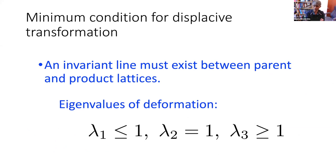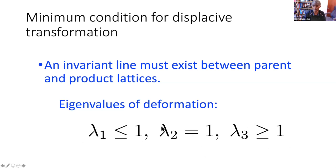The fundamental condition for a displacive transformation is that in order to have an interface which can cause the atoms to move in a disciplined manner, you must have at least one line in that interface which is completely coherent between the parent and product lattices — otherwise diffusion is required. This means that if you imagine the parent crystal being deformed into the product, the eigenvalues of that deformation must satisfy: one eigenvalue equals one — leaving that eigenvector completely undistorted and unrotated — one must be less than one, and one must be greater than one.